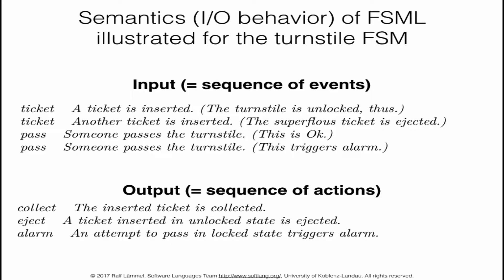Now we want to understand the semantics of our finite state machines — the input-output behavior. The idea is that we can throw events as input at a finite state machine, and in return we get some output that is a sequence of actions. For example, we could insert a ticket, try to insert another ticket, and try to pass. The first ticket would be collected, the second ticket would be ejected, the first person going through would silently be accepted but the turnstile would lock again, and the second person trying to go through would trigger an alarm.